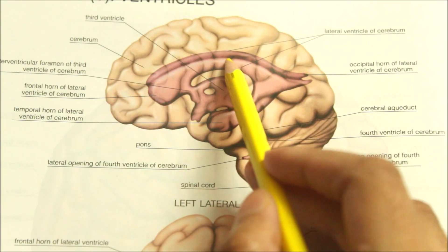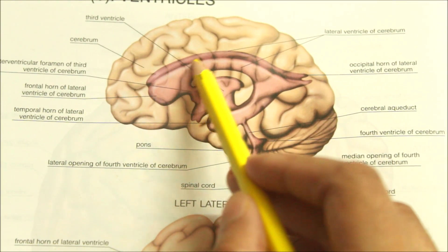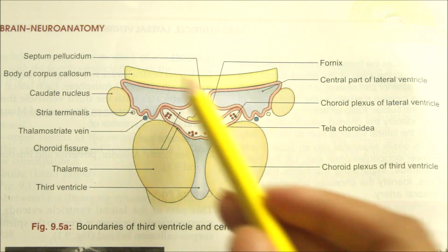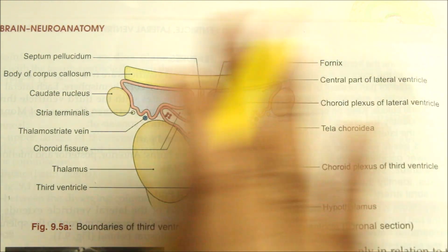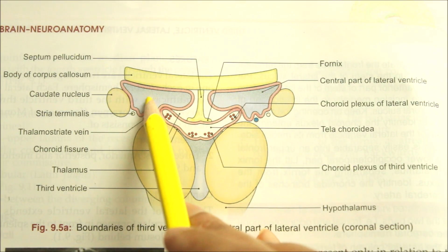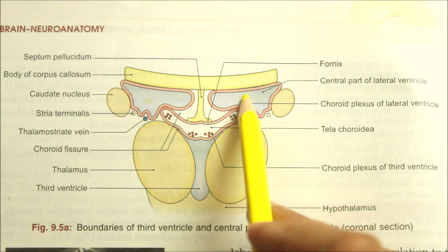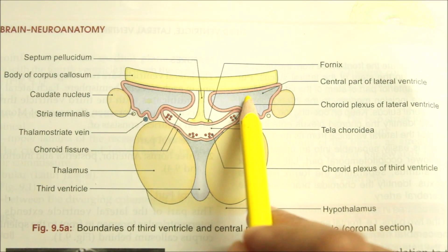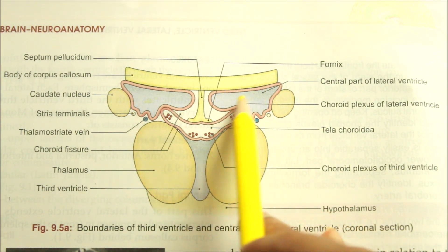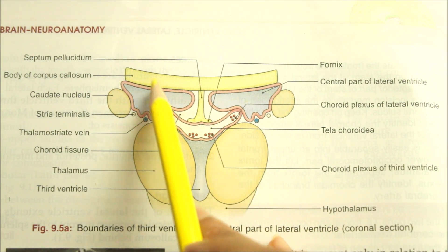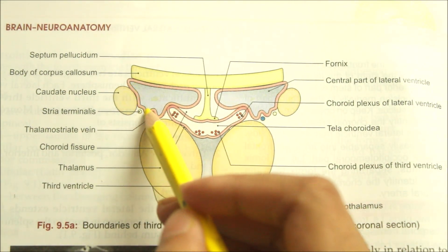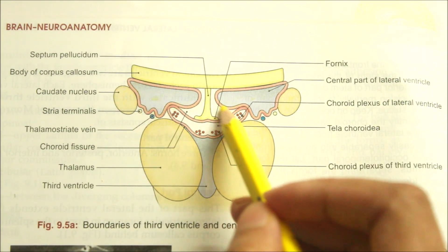Now let's learn about the central part of the lateral ventricle in detail. The central part extends from the interventricular foramen in front to the splenium of the corpus callosum behind. Looking at the boundaries through a coronal section diagram: the roof is formed by the undersurface of the corpus callosum — specifically the body of the corpus callosum. The floor of the central part is formed by several structures.